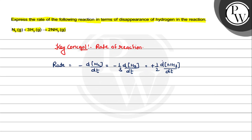Negative sign for disappearance and positive sign for the appearance. We have to write in terms of hydrogen, so rate of reaction is equal to minus 1/3 d[H2]/dt, or simply we can write here rate of disappearance of hydrogen.